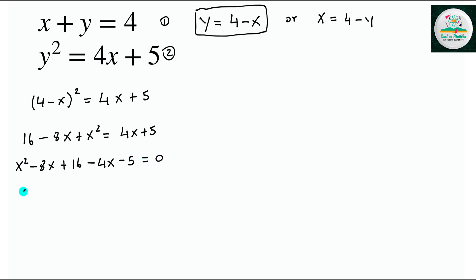Now I have x squared all by itself, just collecting all the like terms. So negative 8x minus 4x will give me minus 12x. 16 subtract 5 will give me plus 11, and that's equal to 0.